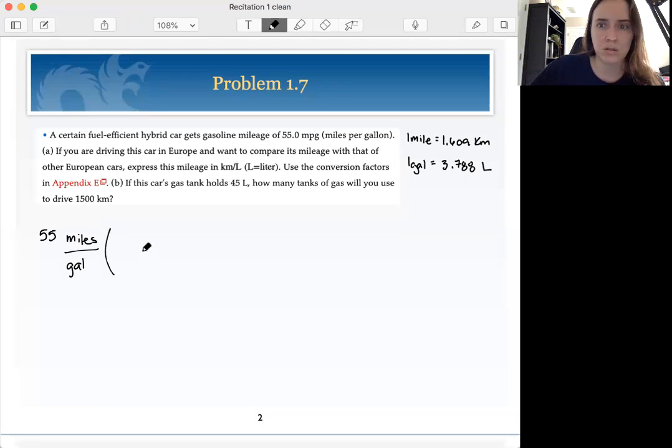Okay. So let's do miles first. So right now miles is on top. We want to cancel out miles. So we need miles to be on the bottom. And our ratio that we know takes us to kilometers. So using our unit conversion, one mile is 1.609 kilometers. So now I'm in units of kilometers per gallon, if I calculate this out.